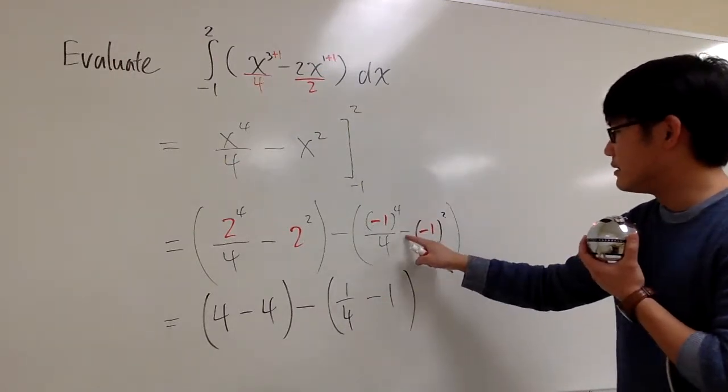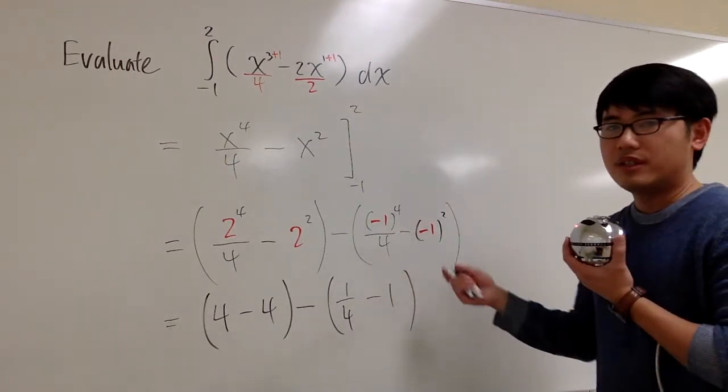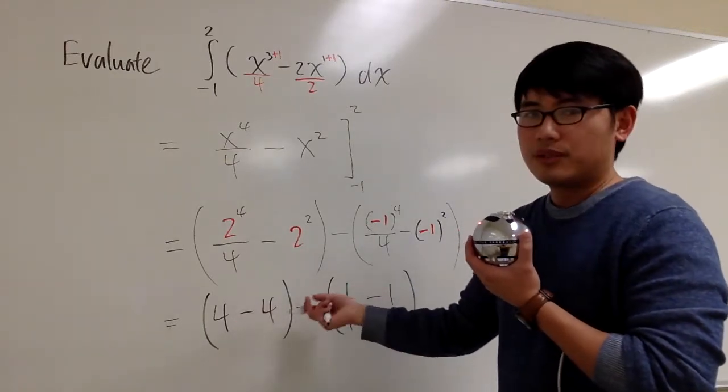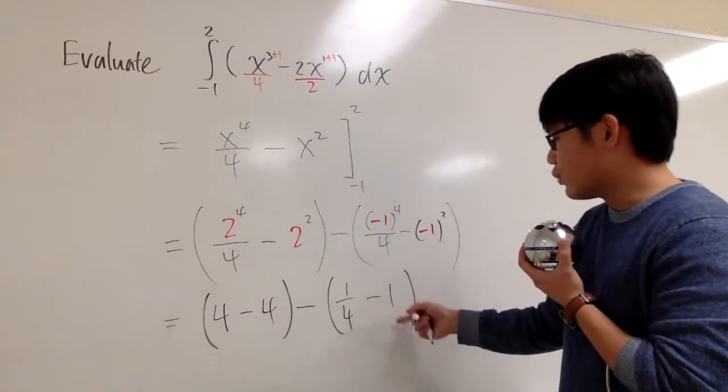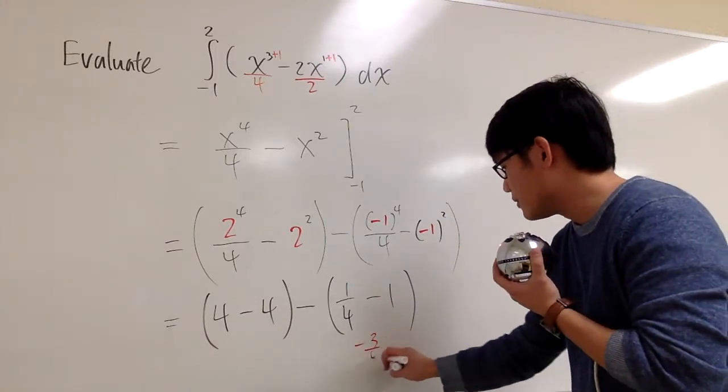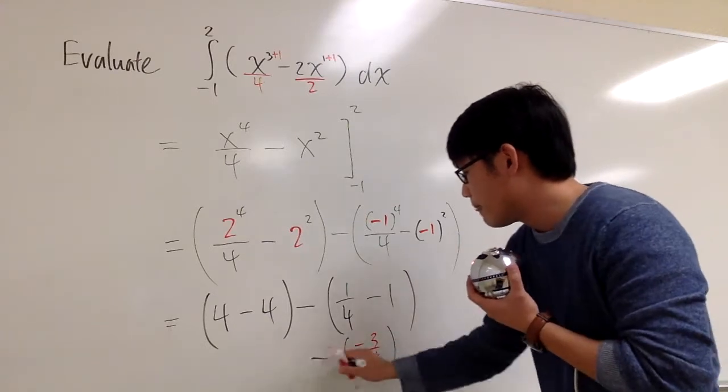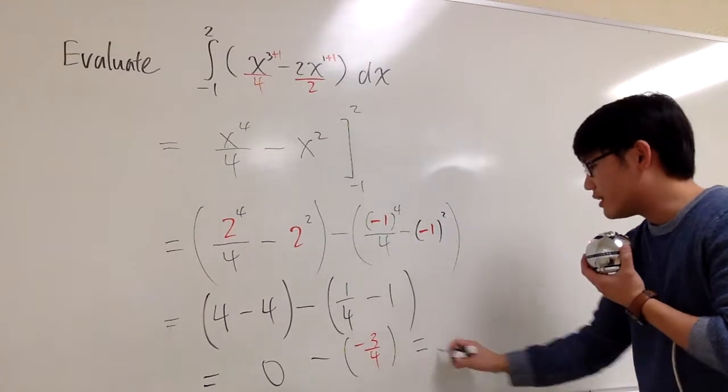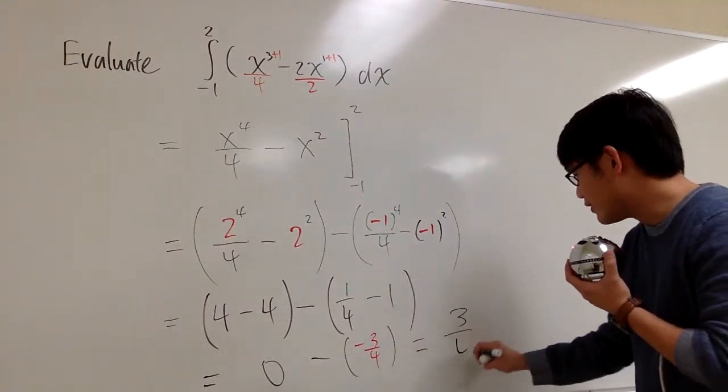1 fourth. And this is minus. This is 1. Negative 1 squared is 1. But anyways, this is going to be 0. 4 minus 4 is 0. That's really nice. 1 fourth minus 1, which is negative 3 fourths. This is going to be negative 3 fourths. That's 0 minus negative 3 fourths. Altogether, we are going to get positive 3 fourths.